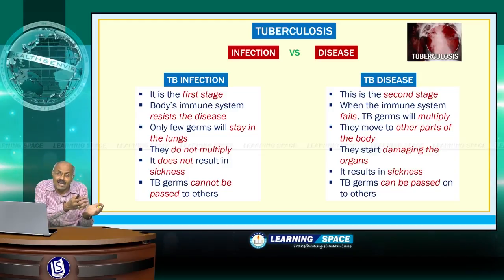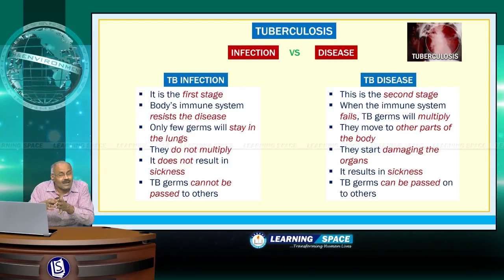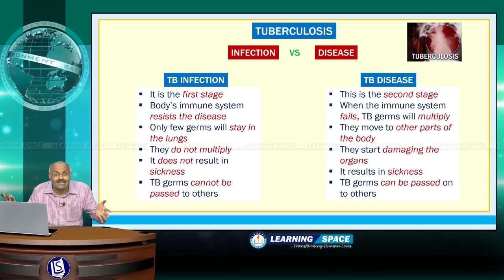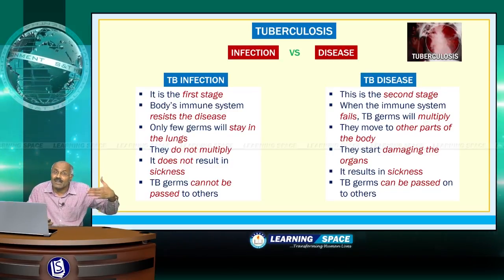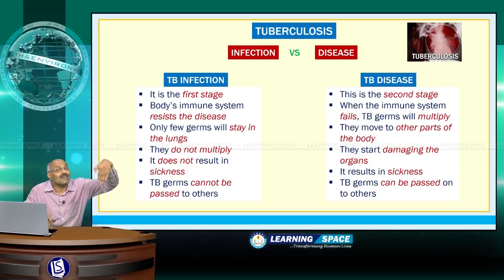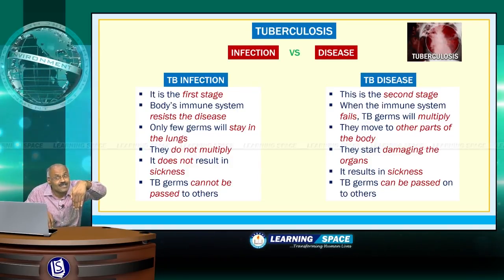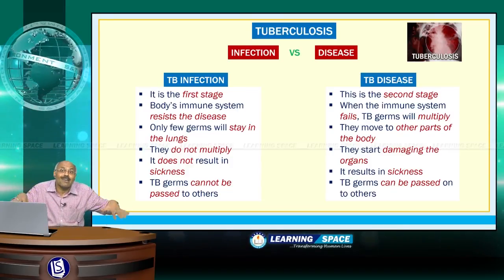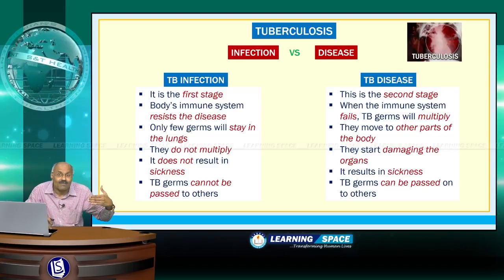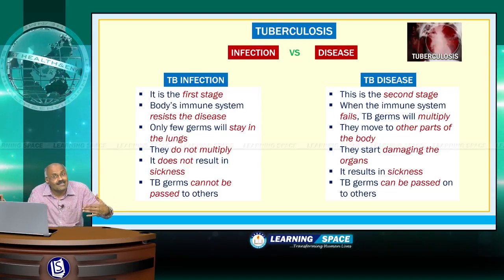There is a difference between infection and disease. Infection is the first stage and disease is the second stage — infection may not result in disease in several cases. The body's immune system will resist the disease. In the case of AIDS patients, the immune system is lost, so it cannot resist the infection and it ultimately results in disease.